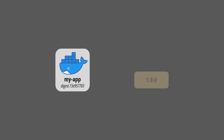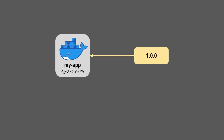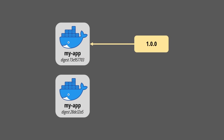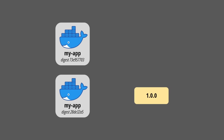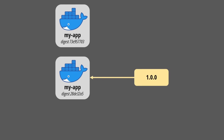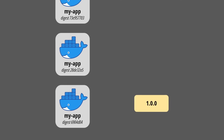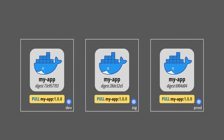I can build an image and tag it with version 1.0.0, then change the content of that image and still give it the same name and tag. I can repeat this process as many times as I wish. This means that if you deploy an application to different environments at different points in time, there is a chance you are running different instances of that image.